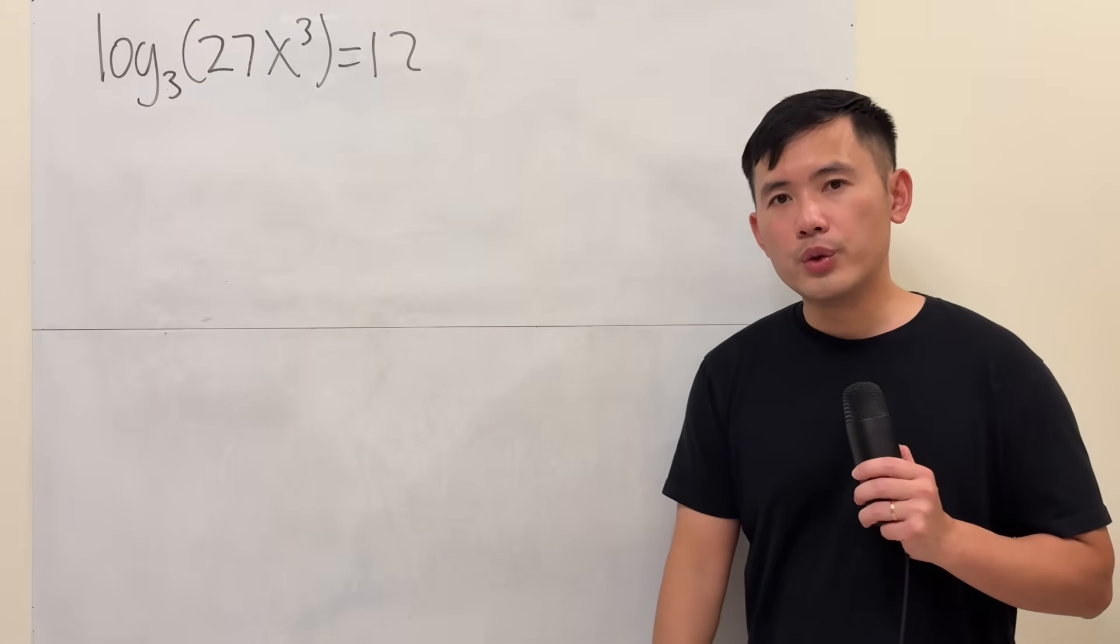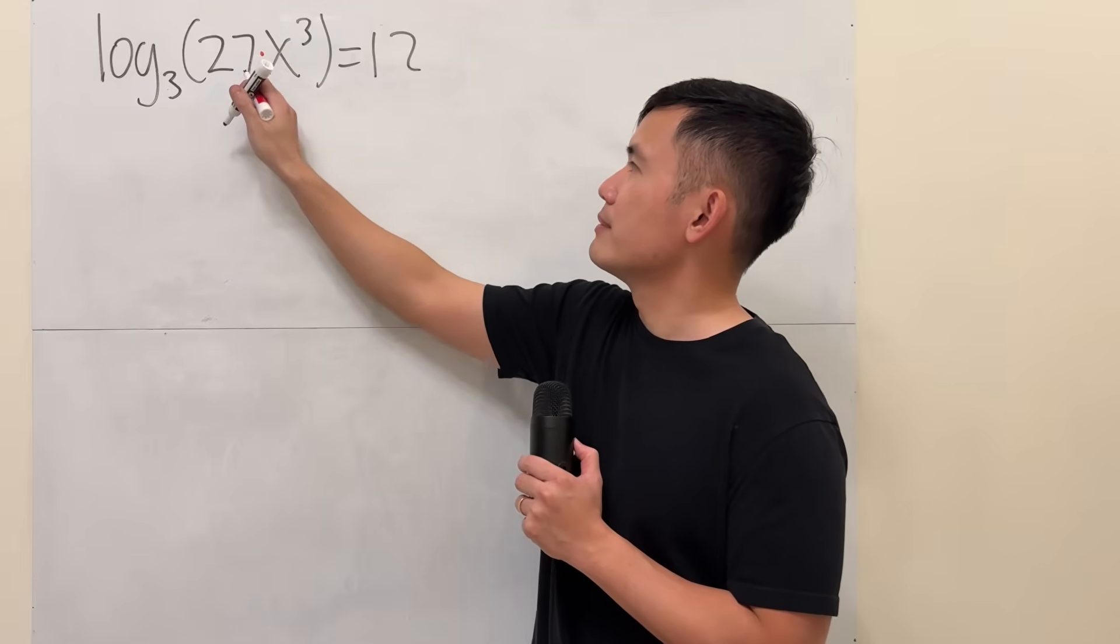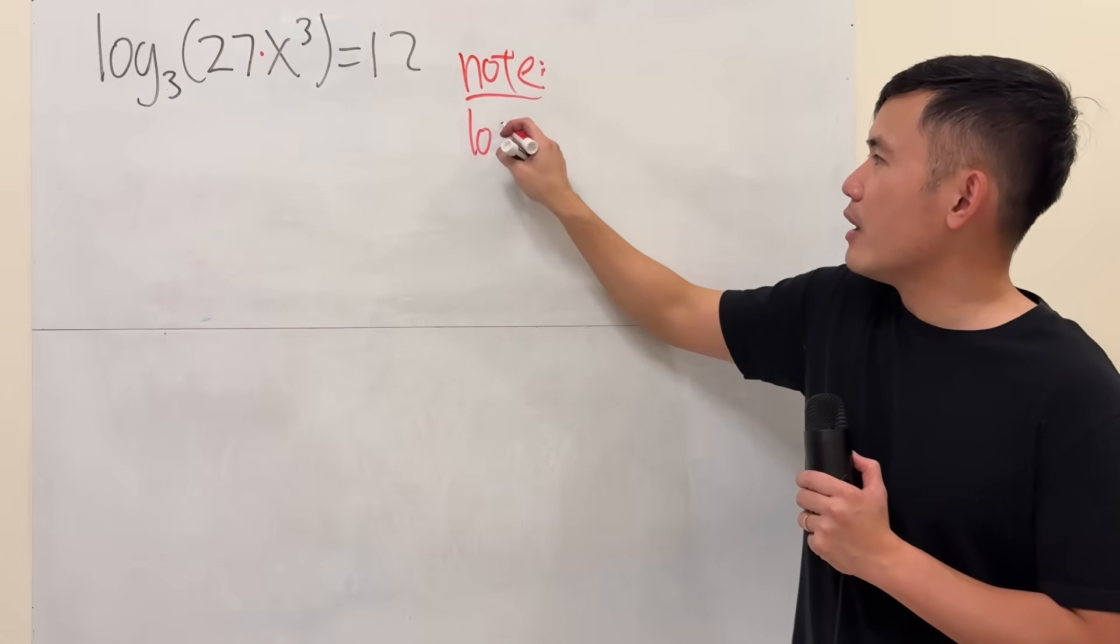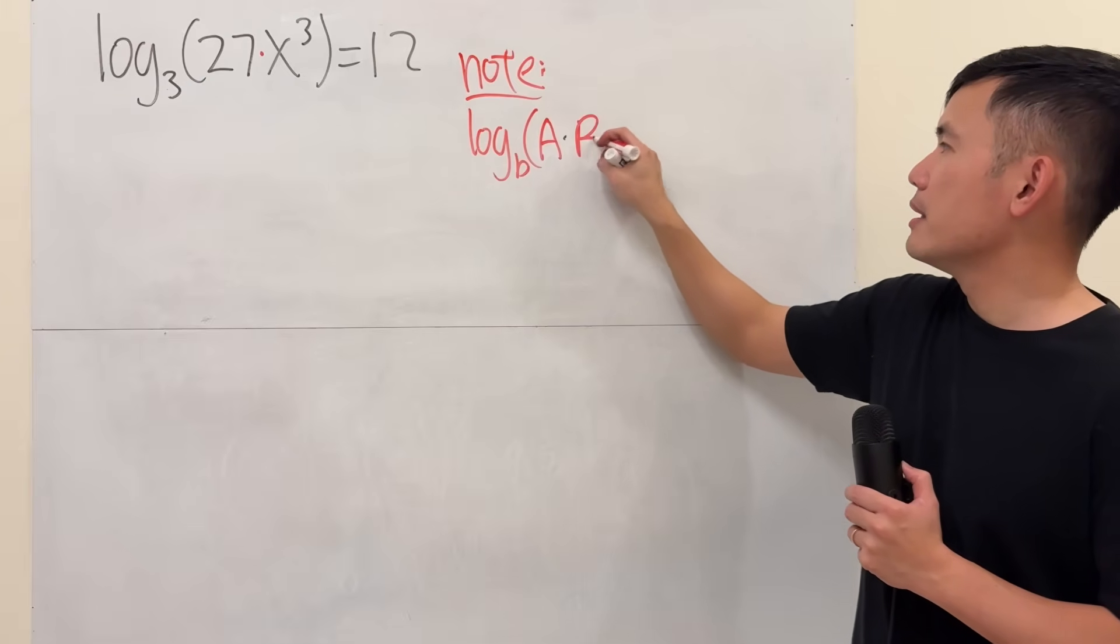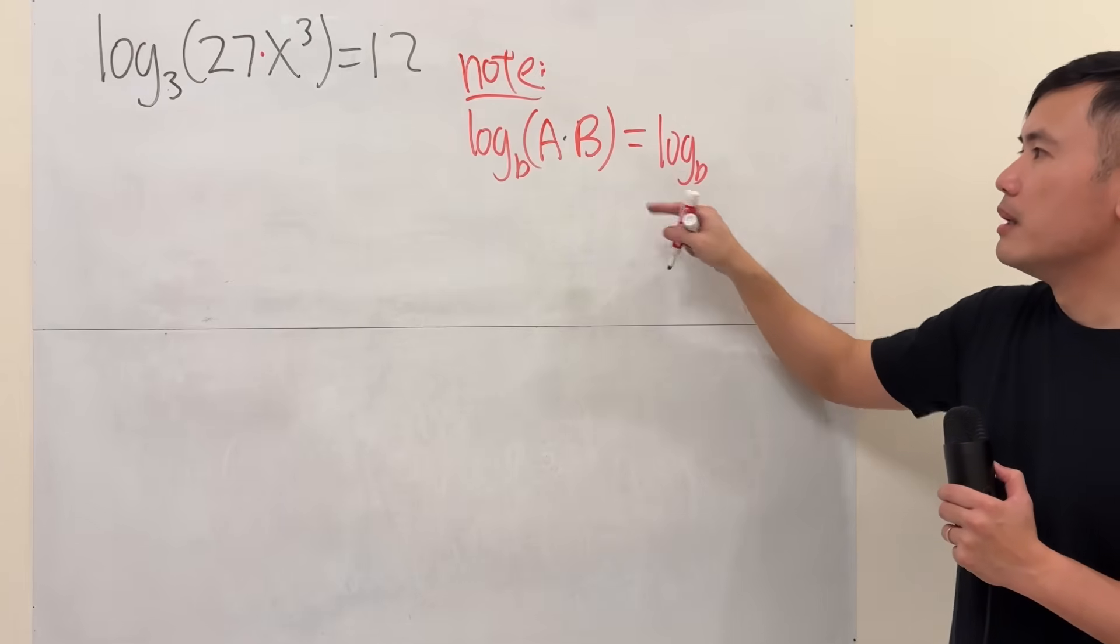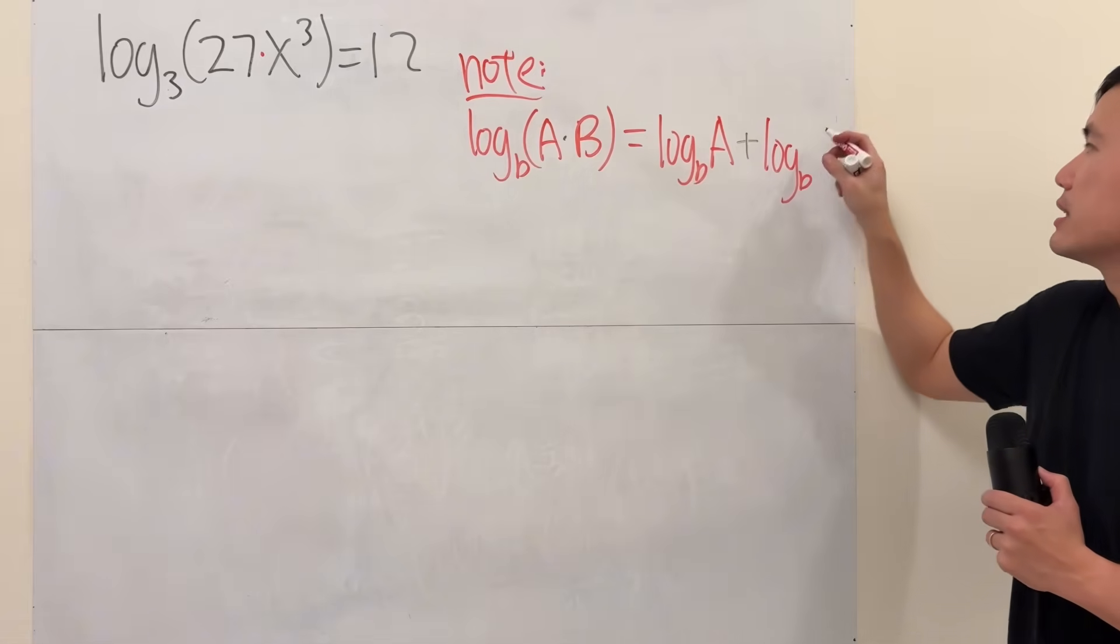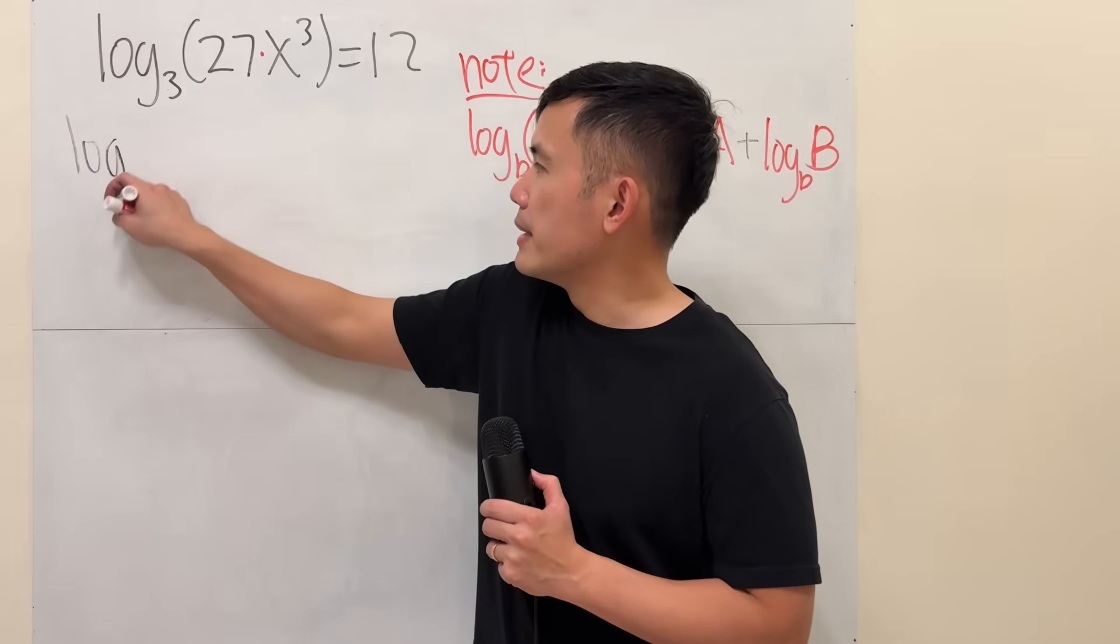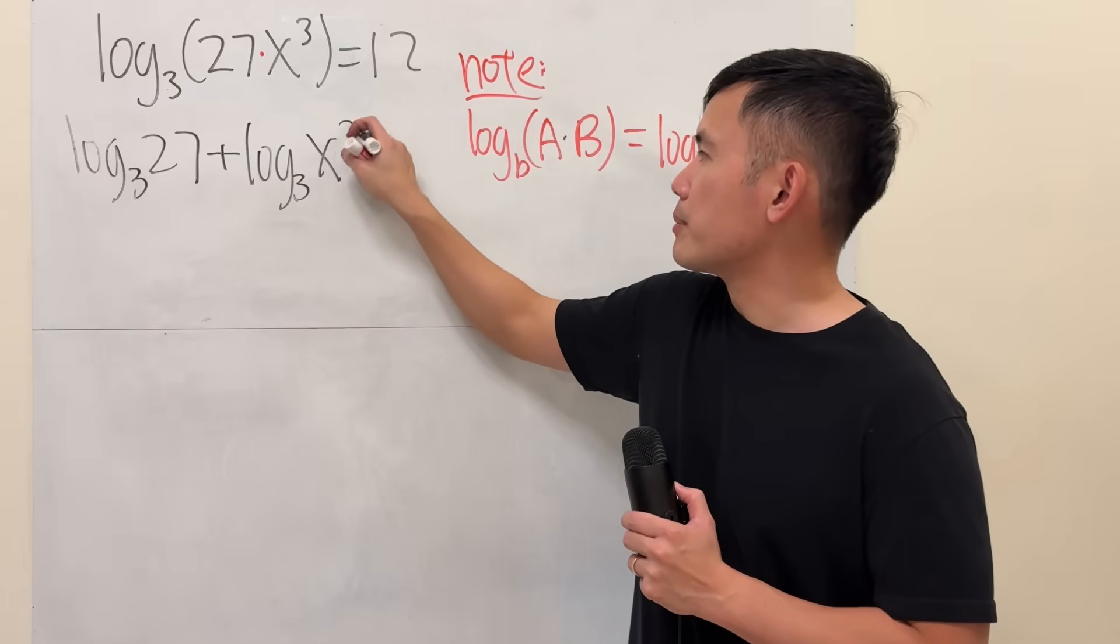So here's how we are going to do it if we use the log properties first. Right here, notice that we have log base 3 of 27, and this is a multiplication. 27 times x to the 3rd power. So here are some notes for you. Note that if we have log with some base b, and let's say we have two things inside, a times B. We can break it down. We will get two logs. The first one is log base b, but the input is just a. And then you add it with another log, same base, but the input is this capital B. So, utilize this property for this part right here. We get log base 3 of 27 plus log base 3 of x to the 3rd power. And that's equal to 12.